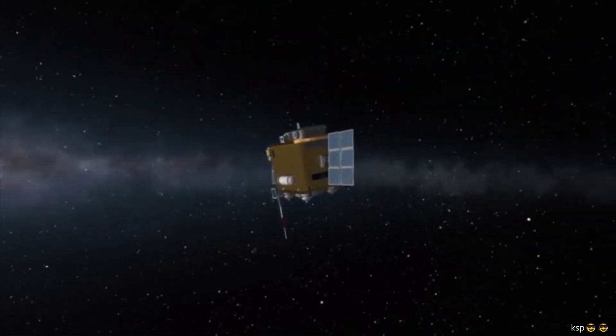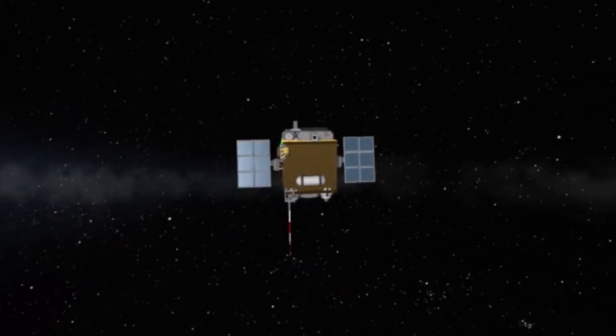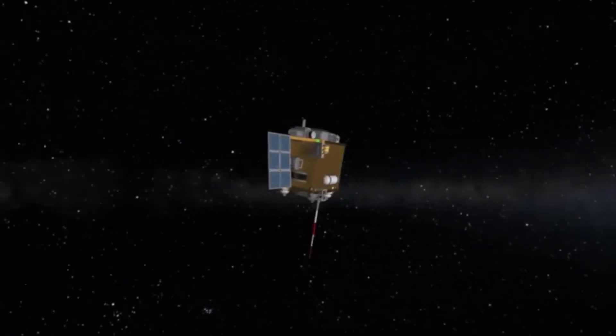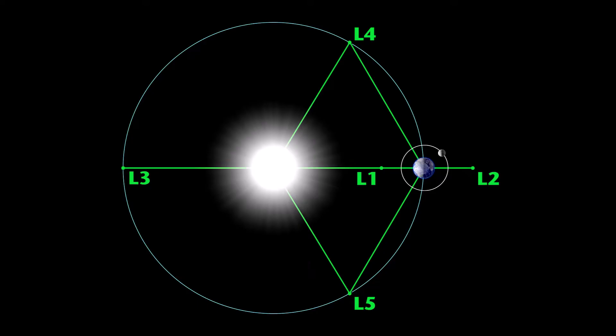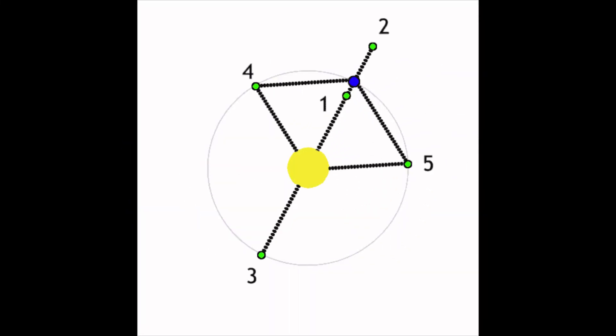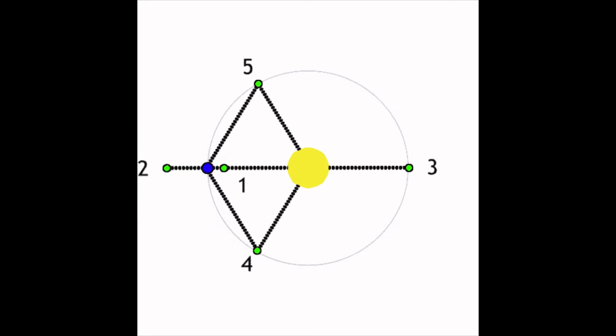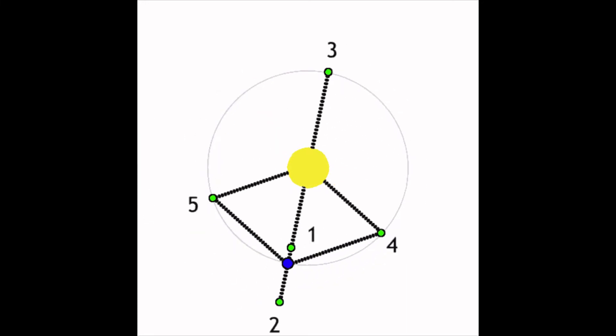Lagrange points are positions in space where gravitational forces of a two-body system like Sun and Earth produce the enhanced region of attraction and repulsion. These specific points can be used by spacecraft to reduce fuel consumption needed to remain in position.